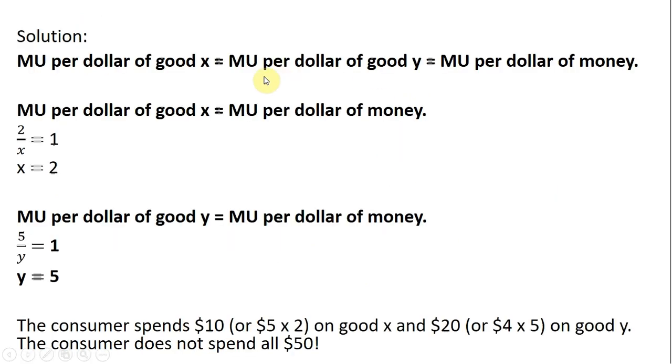And now for the solution. The main thing for the solution, and this is a similar condition as we've seen in other consumer optimization problems, the consumer will allocate his or her budget such that the marginal utility per dollar is equal across all goods. The only thing we have different here is that we have the marginal utility per dollar of money. So let's start by setting the marginal utility per dollar of good x equal to the marginal utility per dollar of money.